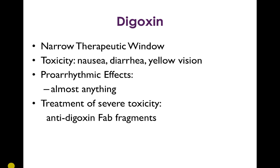Digoxin is a drug with a narrow therapeutic window. Blood levels need to be between approximately 0.6 and 0.9 nanograms per milliliter for proper therapeutic effect. At toxic doses, electrophysiologic side effects are largely mediated by its direct membrane effects on the sodium-potassium exchanger. Digoxin overdose can cause nausea, diarrhea, and yellow vision. Proarrhythmic effects can be almost anything, and the treatment of severe toxicity is with anti-digoxin monoclonal antibody fragments.